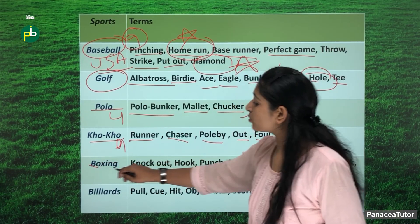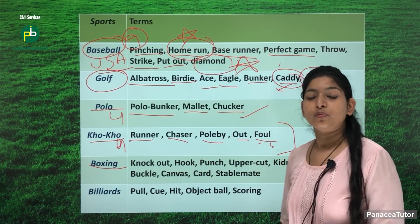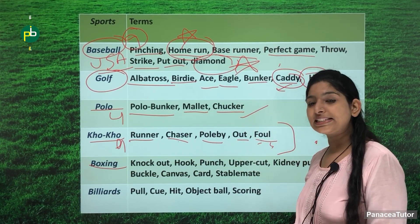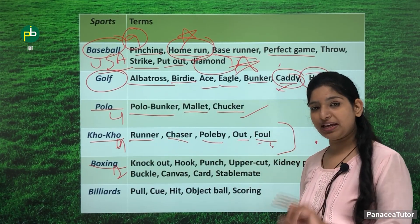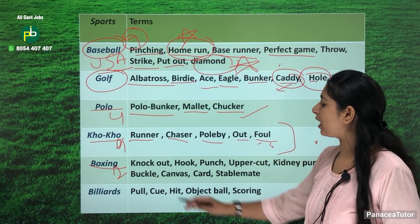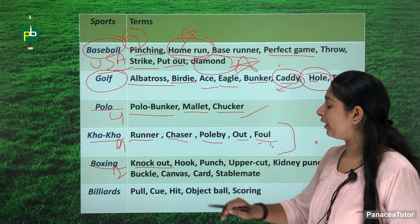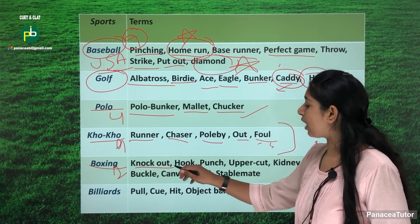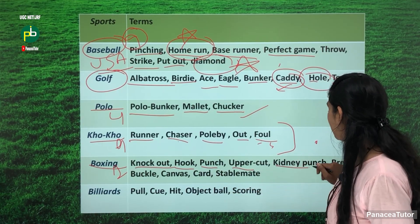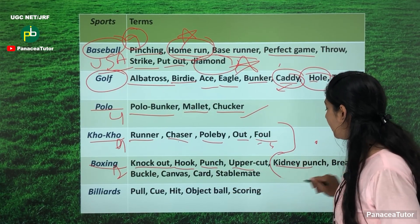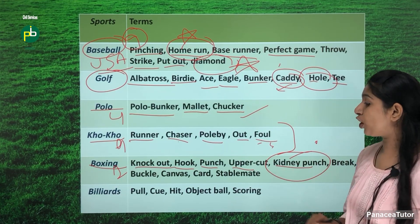The next sport is boxing. In boxing, one player plays from one team. These are related important terms: knockout, hook, punch, upper cut, and kidney punch — these are all your methods of attack and ways to attack your opponent.